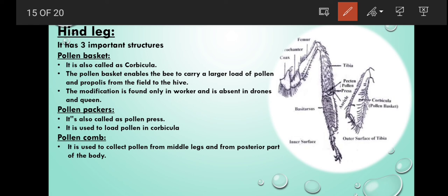Hindleg is situated at the metathoracic region. Hindleg has three important structures: one is pollen basket, another is pollen packers, and lastly pollen comb. Pollen basket is also called corbicula. The pollen basket enables the bee to carry pollen and propolis from the field to hive. This modification is seen only in workers. It is absent in drones. Pollen packers, also called pollen brush, is used to load the pollen in corbicula. Pollen comb is used to collect pollen from the middle legs and from the posterior part of the body.